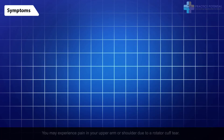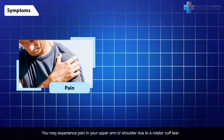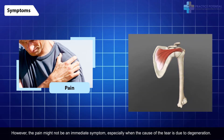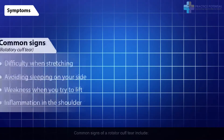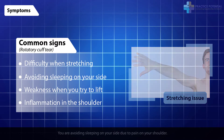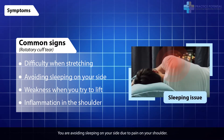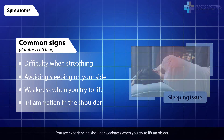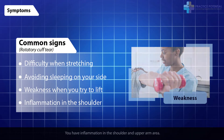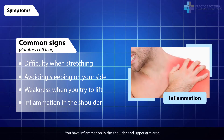Symptoms. You may experience pain in your upper arm or shoulder due to a rotator cuff tear. However, the pain might not be an immediate symptom, especially when the cause of the tear is due to degeneration. Common signs of a rotator cuff tear include difficulty when stretching your arm to full length, avoiding sleeping on your side due to pain on your shoulder, experiencing shoulder weakness when you try to lift an object, and inflammation in the shoulder and upper arm area.